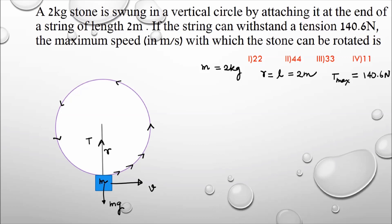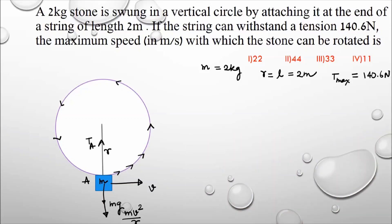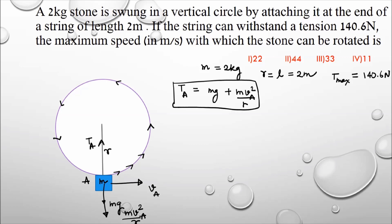Let us take the bottom-most point and call it position A. The tension in the string when the body is at position A is T_A. The forces experienced by the body are its weight mg downward, and because it is in circular motion, it experiences an outward centrifugal force equal to mv²/r. Since the velocity at A is v_A, the centrifugal force is mv_A²/r. Therefore, T_A equals mg plus mv_A²/r.